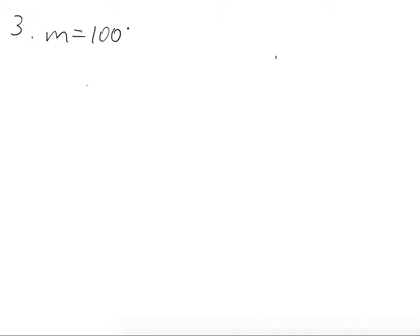A man of mass 100 kg is standing on weight scales in a lift. If the scale reads a certain value in Newtons, find the reading on the scales if the object is at rest. In the first case, if the object is at rest, the reading on the lift will be the same as gravity.